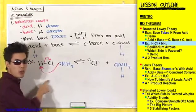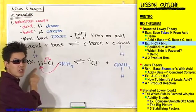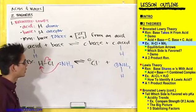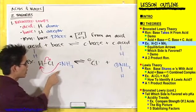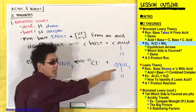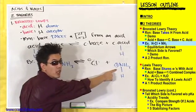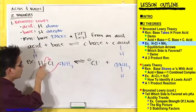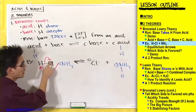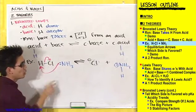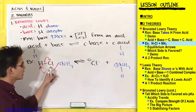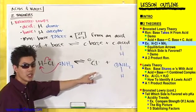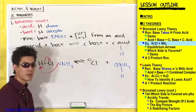What happens is this: nitrogen goes and bonds to this hydrogen. At the same time, this hydrogen breaks its bond with this chlorine. So nitrogen goes and picks up this hydrogen, turns into NH4+. At the same time, this bond breaks between H and Cl, chlorine gets those electrons as a lone pair, turning into Cl-. Do you guys see what happened here?